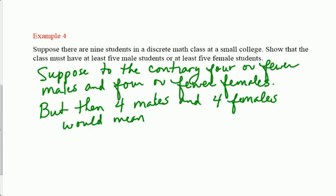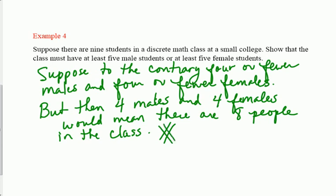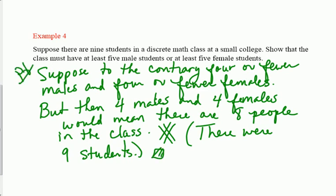They're students but they're still people, we hope, and that's our contradiction. What do we know from what was given? There were nine students in the class. That is your proof by contradiction, and we can go ahead and put a little box here and call that a proof. There you have it.